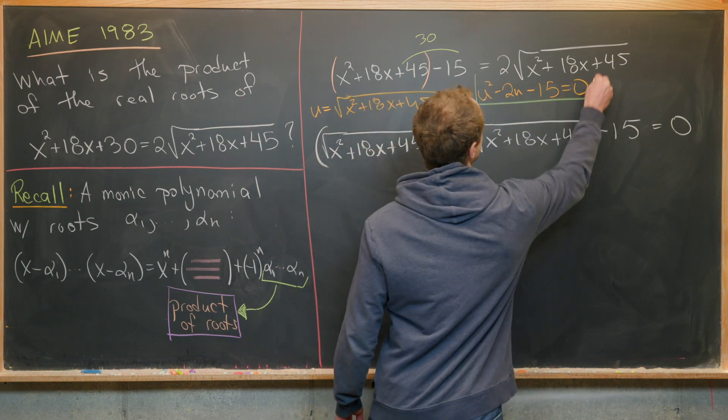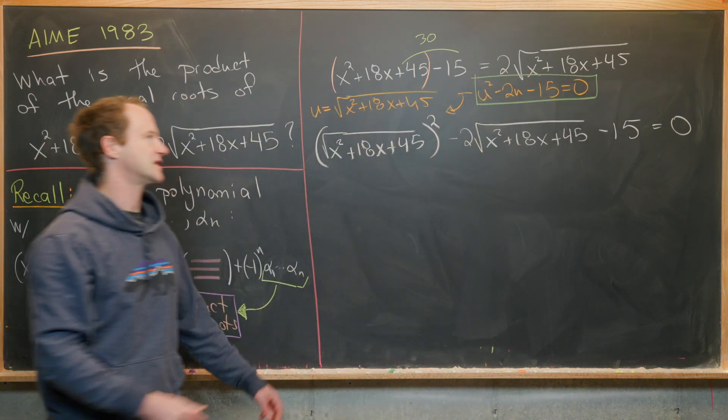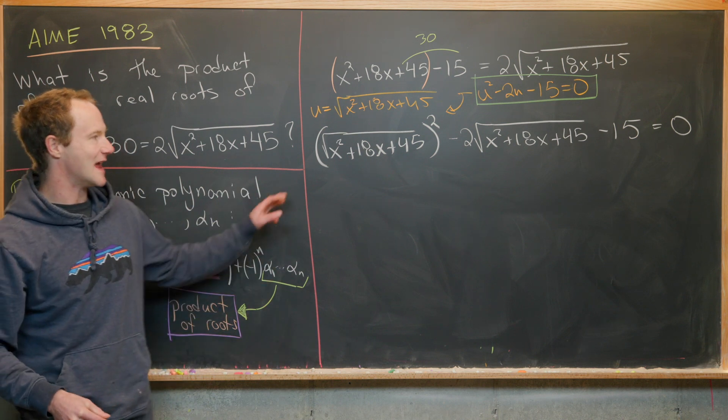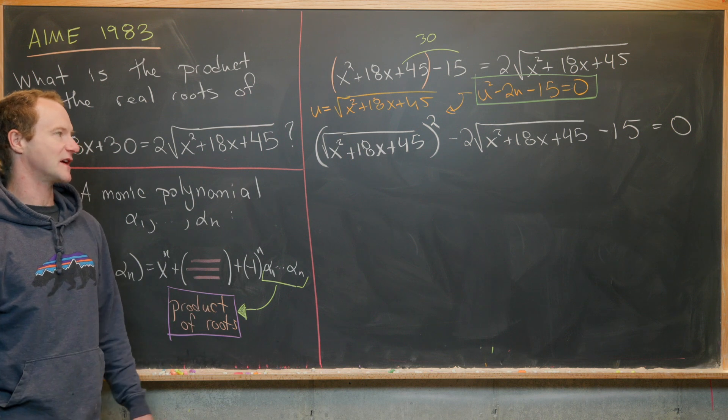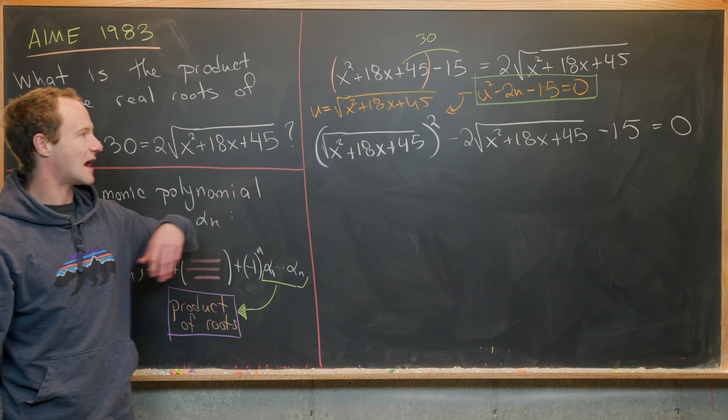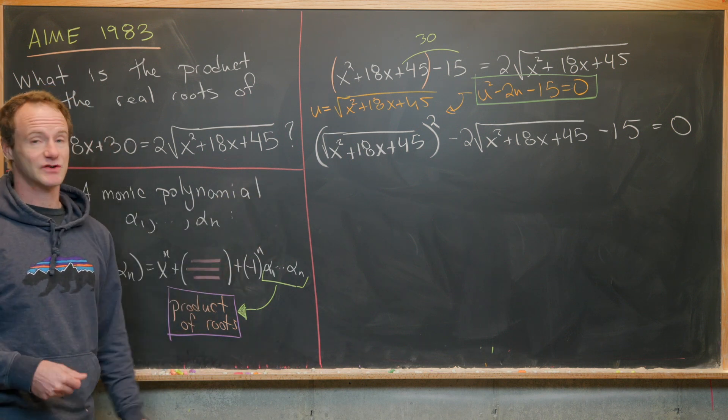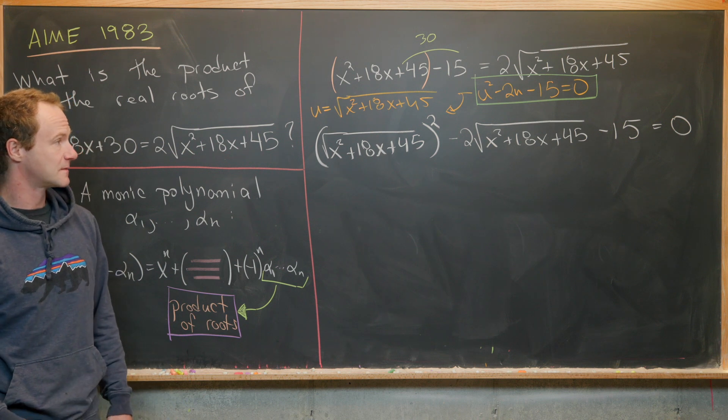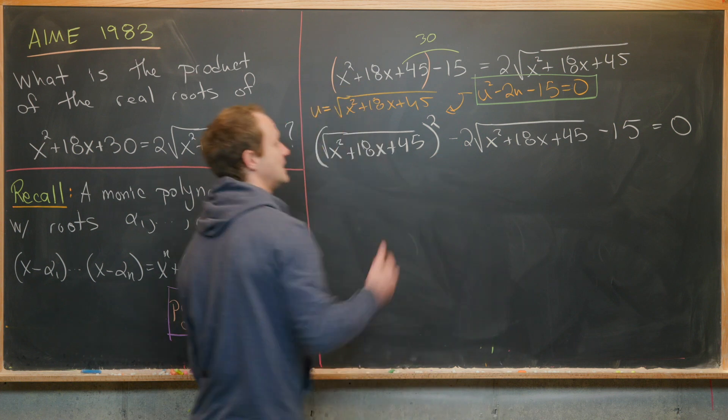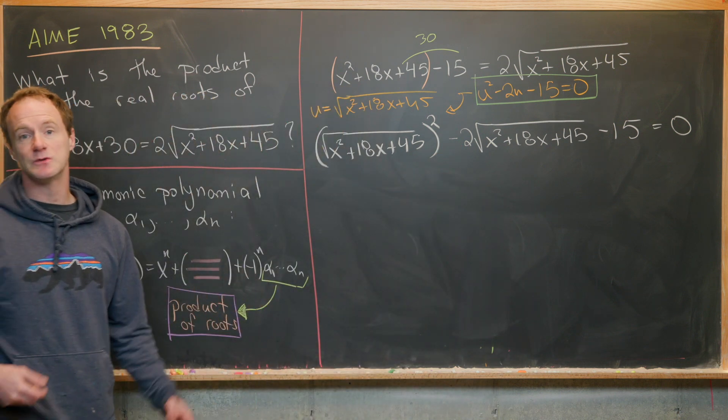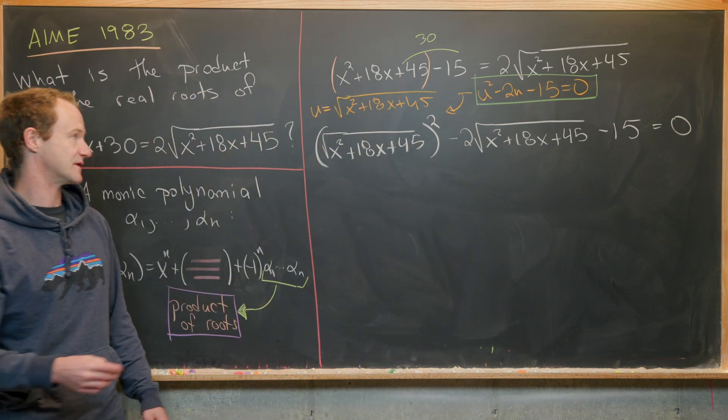We're actually not going to make that substitution because it's not super necessary. But if you want to rename this big object to some simpler variable, that's okay. Now being inspired by factorization of quadratic polynomials, we see that -5 and 3 multiply to -15 and add to -2, so that'll give us a factorization.